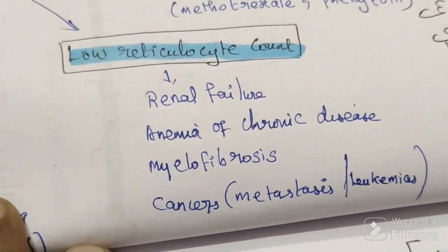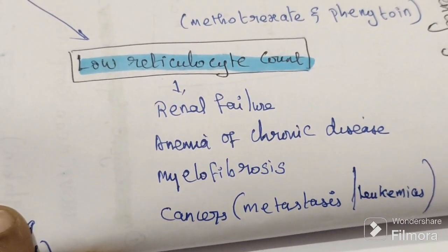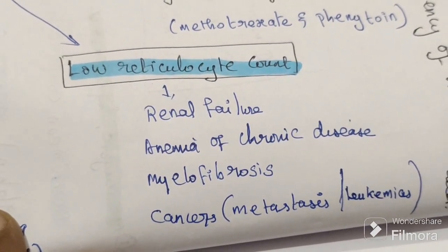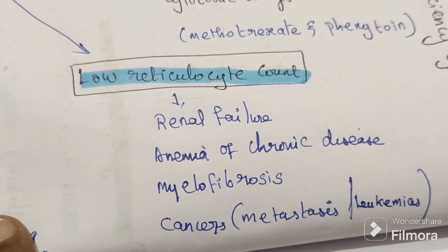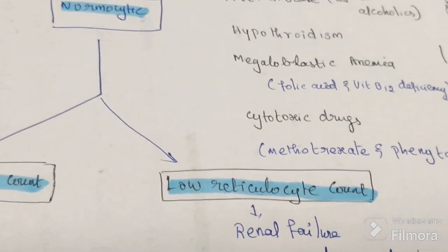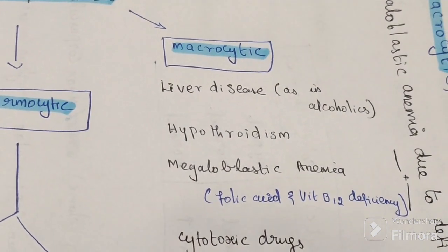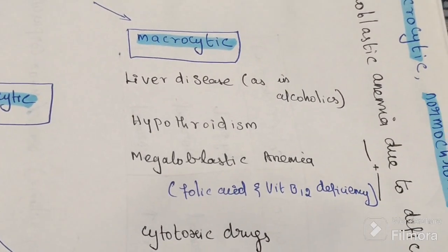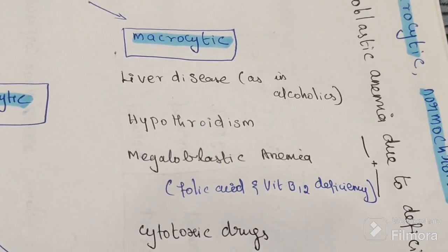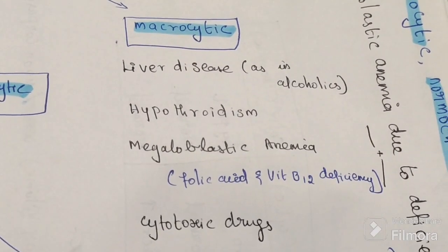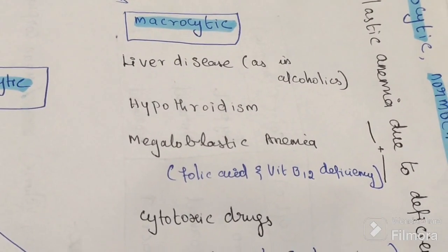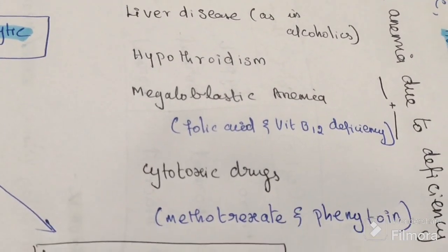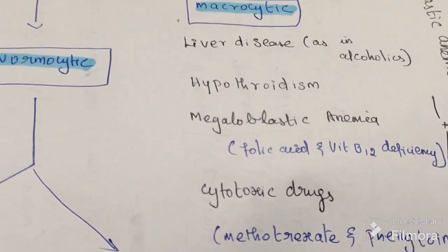Low reticulocyte count examples include renal failure, anemia of chronic disease, myelofibrosis, cancer, metastasis, and leukemias. The last type is macrocytic anemia. Examples include liver disease such as alcoholic liver disease, hypothyroidism, megaloblastic anemia due to deficiency of folic acid and vitamin B12, and cytotoxic drugs.